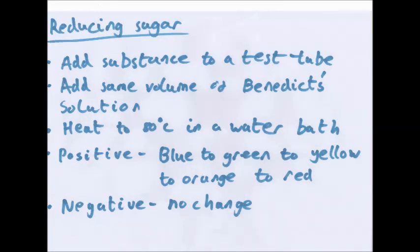Reducing sugar: most sugars are reducing sugars — glucose, fructose, and so on. Add the substance to a test tube and add the same volume of Benedict's solution, which is a slightly alkaline version of copper sulphate. Heat to 80 degrees in a water bath. A positive result will change colour: blue to green to yellow to orange to red. The further the colour change, the more reducing sugar there is. Negative: no change.